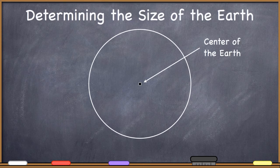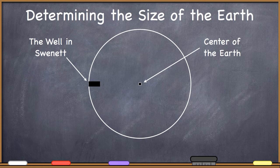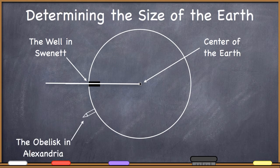Let's draw this out. Here is the earth, and here is the center of the earth. Would you agree that there is a straight line that runs right from the center of the earth, straight up through the well in Swenet? I hope so, so let's put that line in. Then will you also agree that there is a line that goes right from the center of the earth up to the very center of the obelisk in Alexandria? I hope so, so let's draw that line in too.